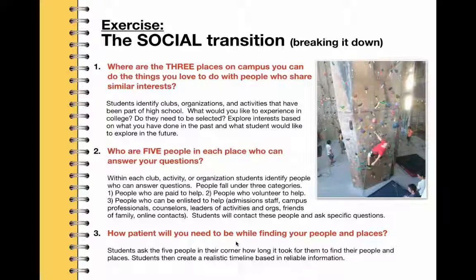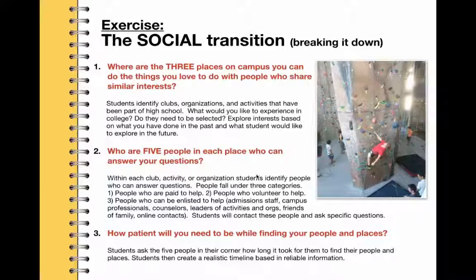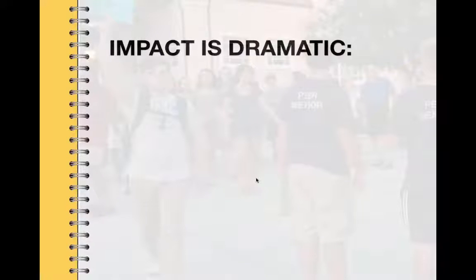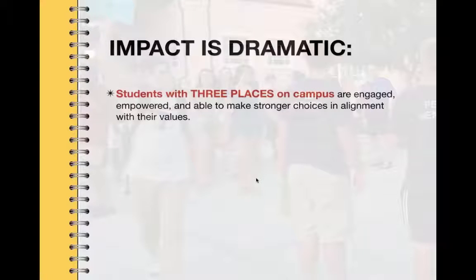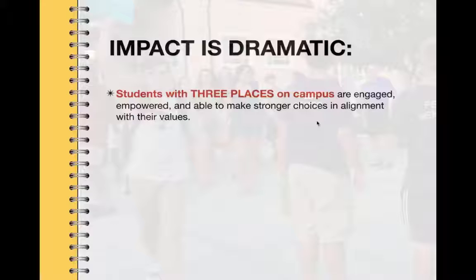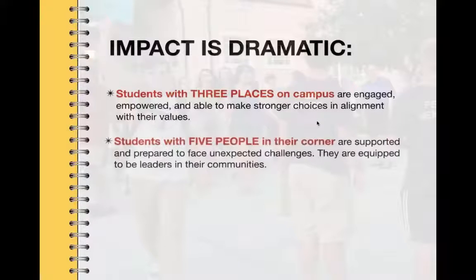I've given you a lot — we've moved really quickly through this. I want to make sure I get to your questions, so I want to wrap up the resources part a little bit faster. The impact of putting transition first: students who can identify their places are engaged and empowered — they can make strong choices in alignment with their values. Students with five people in their corner are supported and prepared to face challenges — they're equipped to be leaders in their community. When students hurt themselves, run, hide, attack, or blame, they don't have people and they don't have places.